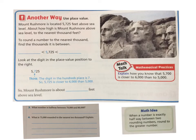Now let's talk about another way. We can also use what we know about place value to help us round numbers. In this case it says Mount Rushmore is located 5,725 feet above sea level. About — there's that word about. Remember, the word about tells us that we need to estimate; we're not finding an exact answer, we are finding an estimate. About how high is Mount Rushmore above sea level to the nearest thousand?